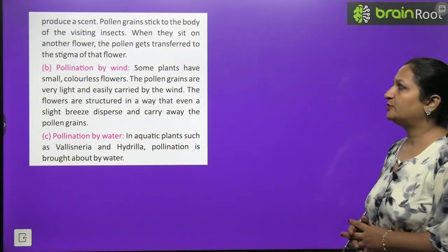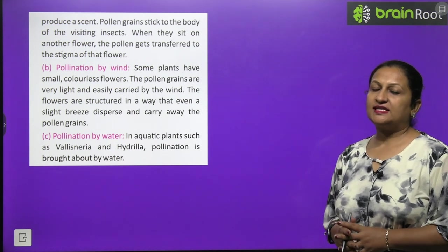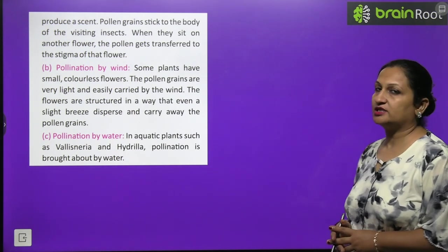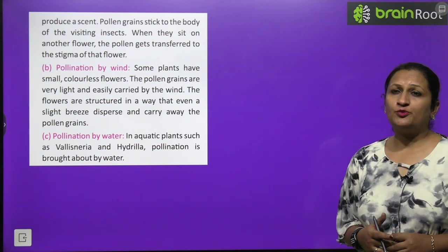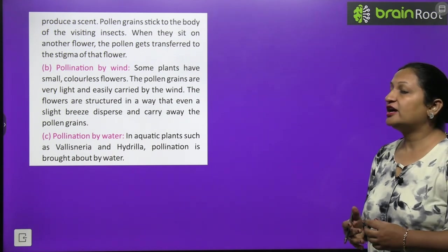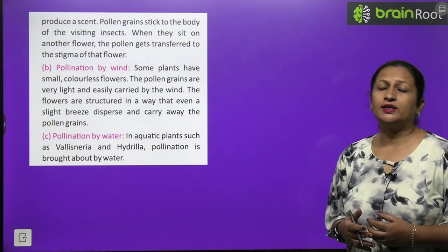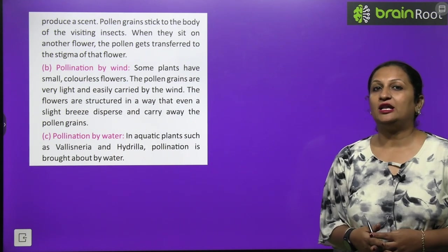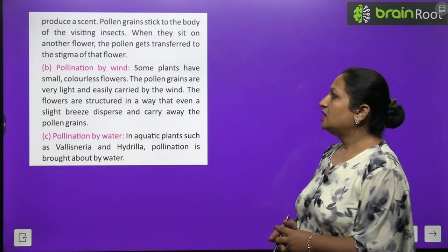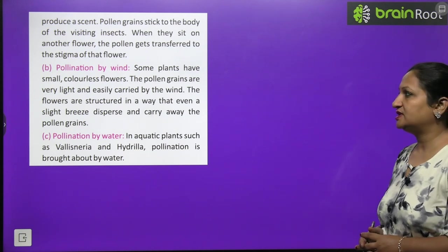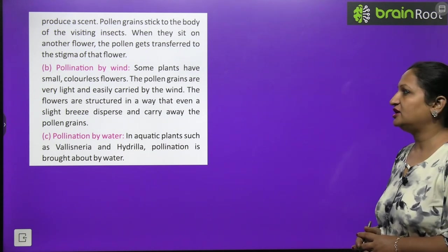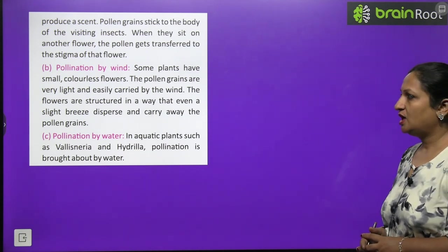Now children, pollination by wind. Some flowers have small colorless flowers. So their pollen grains also have to be transferred. Now their pollen grains children, they are very light weight, very light, which can easily blow with the help of wind. The flowers are structured in such a way that even slight breeze disperse and carry away the pollen grains.